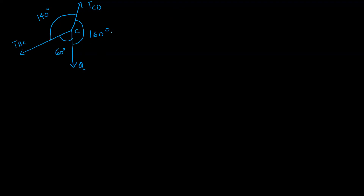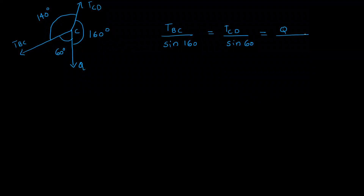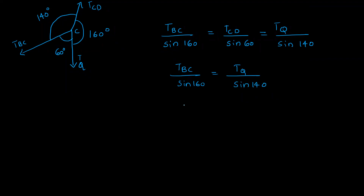We have three forces and three angles. Applying the sine rule: TBC by sine 160 equals TCD by sine 160, equals TQ by sine 140. If we have a value of TBC, then TBC by sine 160 equals TQ by sine 140.